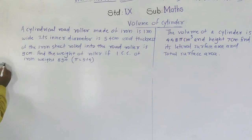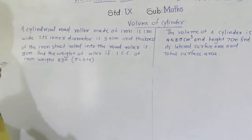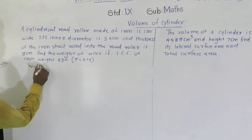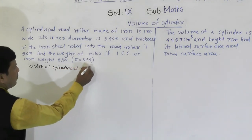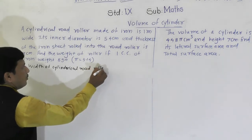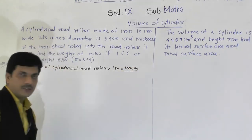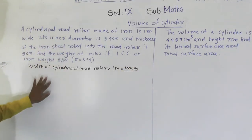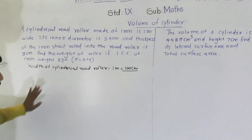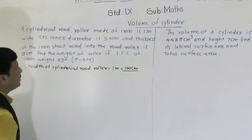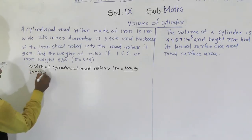Let's read the problem again and identify the given values. A cylindrical road roller made of iron is 1 meter wide — this means the width of the cylindrical road roller is equal to 1 meter. 1 meter equals 100 centimeters. In this problem, we use width as equal to the height of the cylinder, so h equals 100 centimeters.